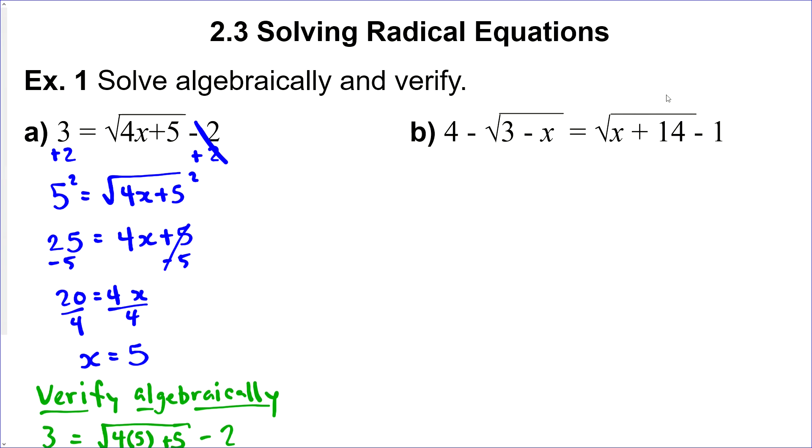For the next question, we can't isolate the radical and get rid of it in one step because there's two radicals. So we'll pick one of them to isolate and get rid of first. By adding one on both sides here, we can isolate this radical on the right. Now, if we square both sides, we'll get rid of this radical here.